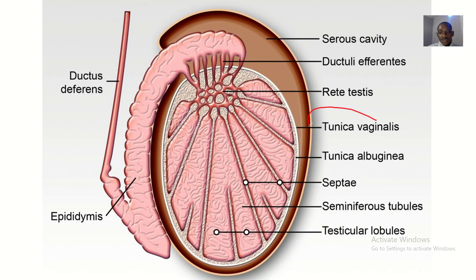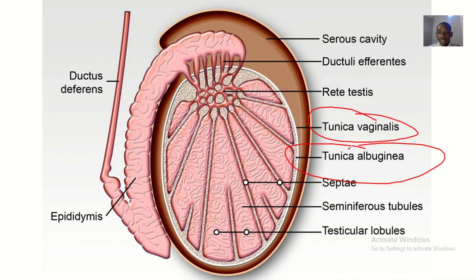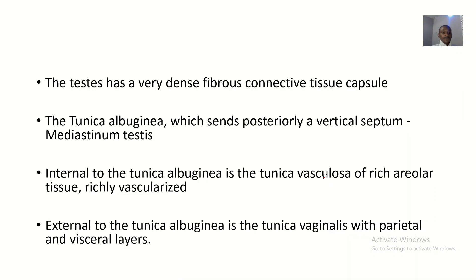I would like you to note the tunica vaginalis, which is the outermost portion of the testes. Notice the tunica albuginea, which is the middle part of the testes. Then inside the testes is what we call the tunica vasculosa. Note these three portions — these are the micro details about the testes. The testes itself is a very dense fibrous connective tissue capsule.